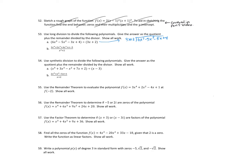I didn't give myself quite enough room there, but anyway. So what do I multiply 3x by to get 6x cubed? It should be 2x squared up here. So 2x squared times 3x is 6x cubed. 2x squared times 2 is plus 4x squared. And then I want to subtract those. That'll give me 0, and then 5x squared minus 4x squared is negative 9x squared.